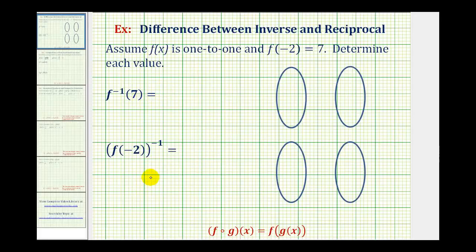These two examples will emphasize the difference between inverse and reciprocal. Assume f of x is a one-to-one function and f of negative two is equal to seven. We want to determine each value here on the left, and the notation here is extremely important.